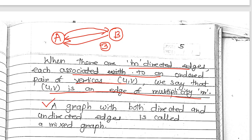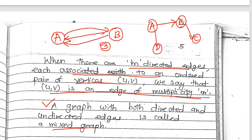A graph with both directed and undirected edges is called a mixed graph. For example, with vertices A, B, C, D, some edges may be directed and some undirected — that is called a mixed graph. These are all the types of graphs covered in this topic.